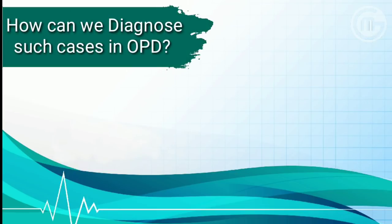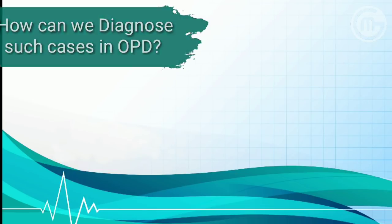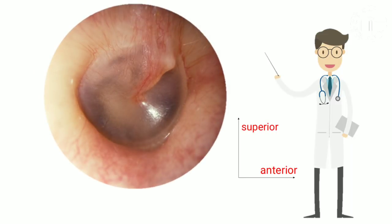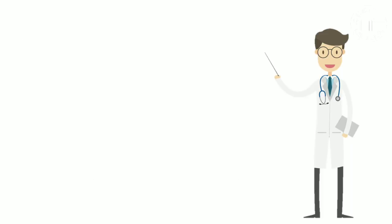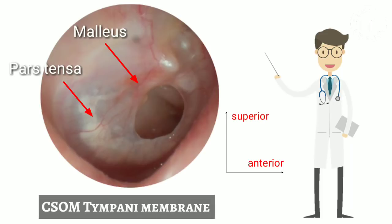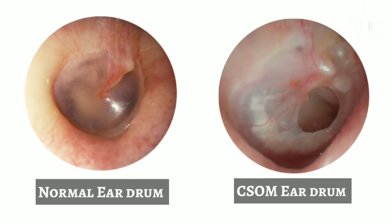How can we diagnose such cases in OPD? Here in the picture you can see a normal tympanic membrane where the pars tensa is normal and intact — there is no perforation. Now look at the otitis media patient's ear drum. There is a large central perforation of pars tensa which is easily visible. Now you can see the difference properly.